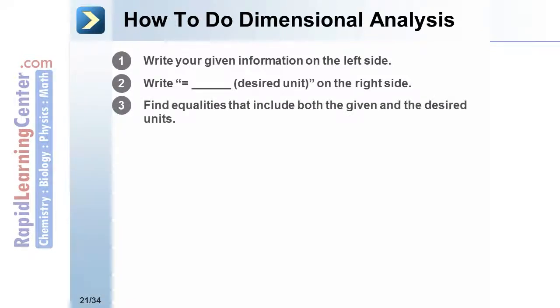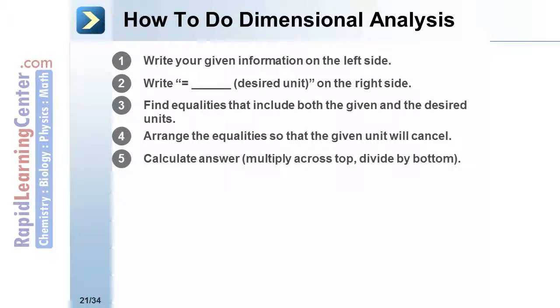Step 3: Find equalities that include both the given and the desired units. Step 4: Arrange the equalities so that the given unit will cancel. Step 5: Calculate the answer by multiplying across the top and dividing all numbers on the bottom.